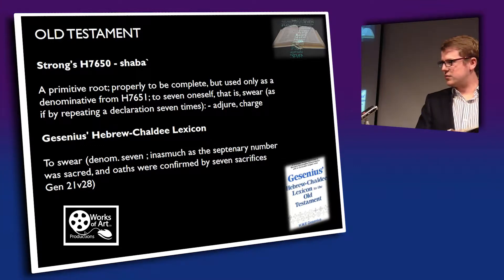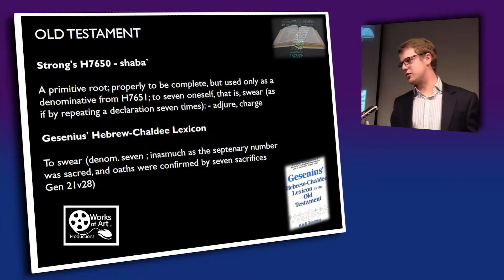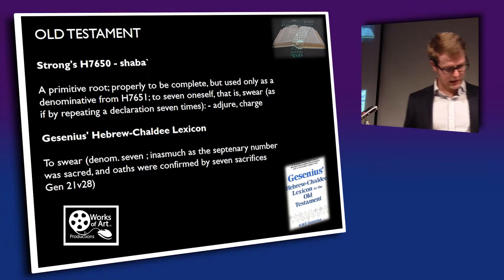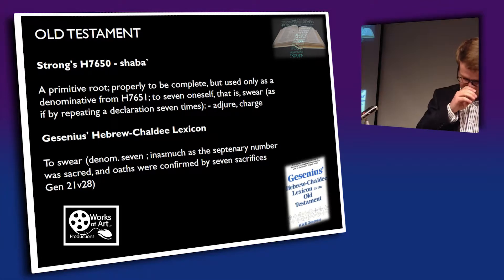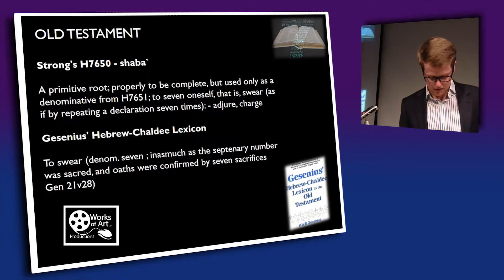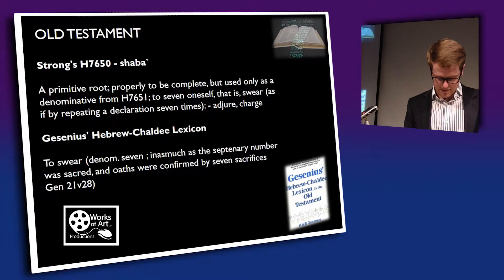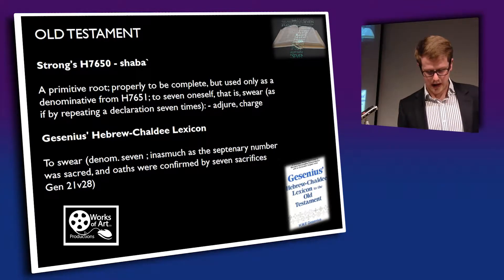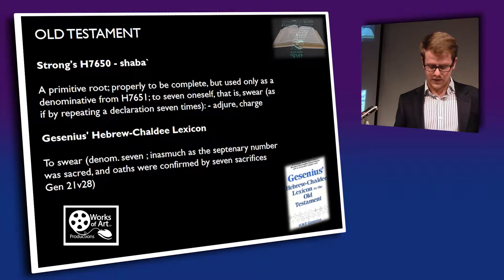Genesis 21 is the chapter about Sarah being promised a child, and we're going to verse 27: 'And Abraham took sheep and oxen and gave them unto Abimelech, and both of them made a covenant. And Abraham set seven ewe lambs of the flock by themselves. And Abimelech said, What mean these seven ewe lambs? And he said, These seven ewe lambs shalt thou take of my hand, that they may be a witness unto me that I have digged this well. Wherefore he called that place Beersheba, because there they sware both of them.'